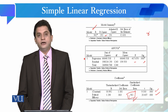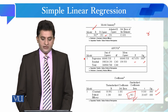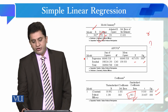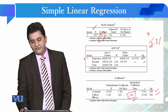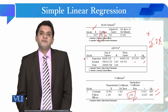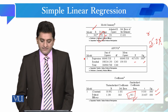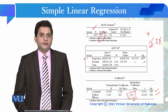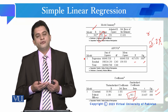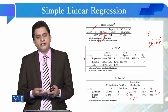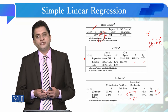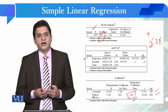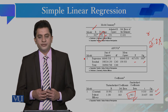This model tells us that political efficacy explains 25.2% of the variance in the dependent variable, and this is a statistically significant relationship. Theoretically, this also makes sense — the proposition that the higher the political efficacy, the higher the political participation.